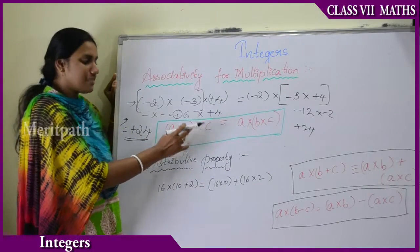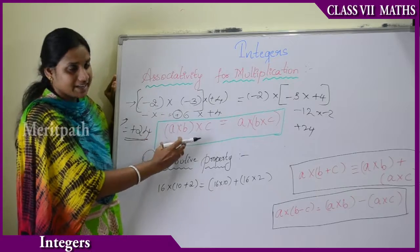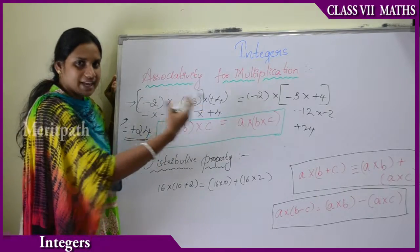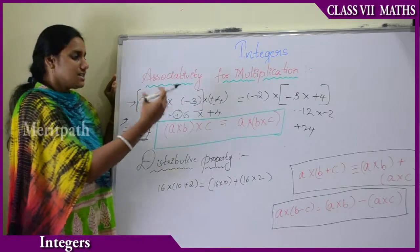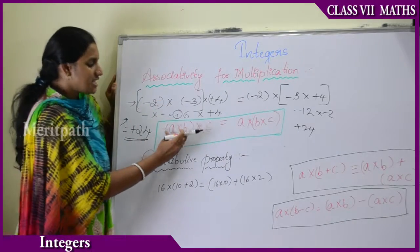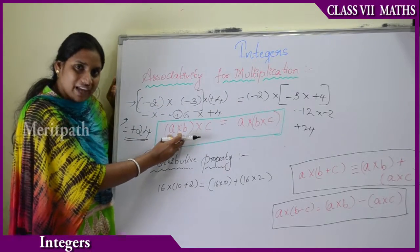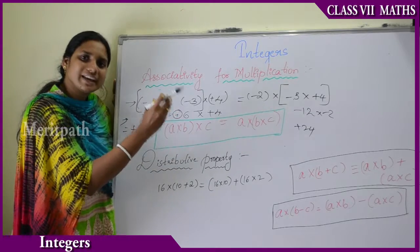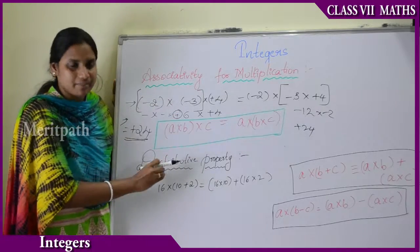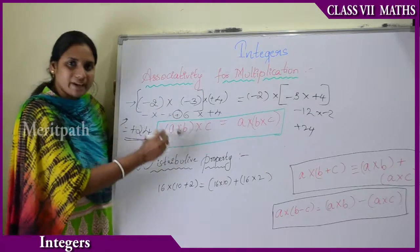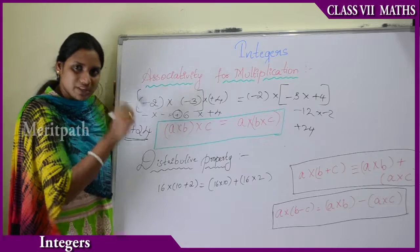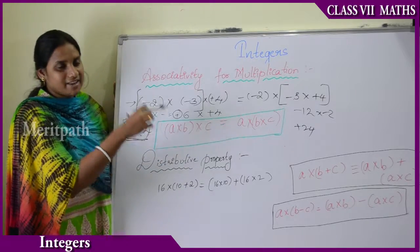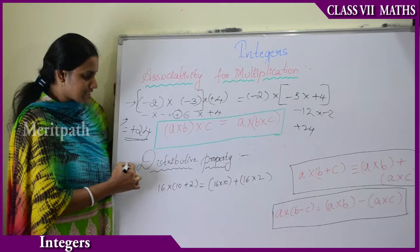The associative property states: A into (B into C) equals (A into B) into C. That means we multiply the elements inside the bracket first, then multiply with the third element. When we change the grouping of multiplication of three integers, the result remains the same.